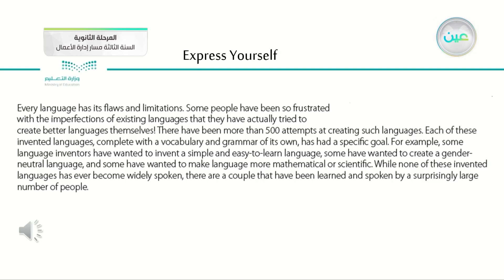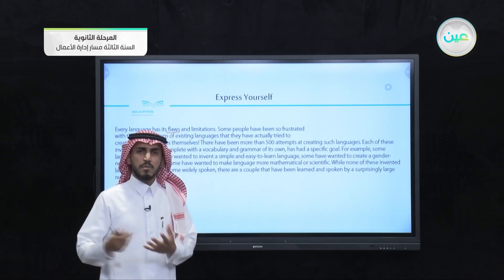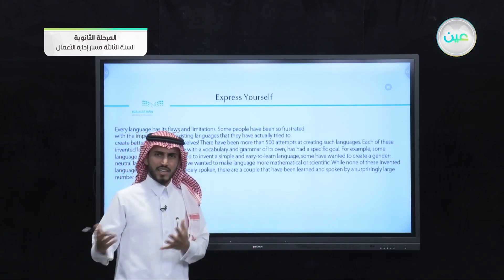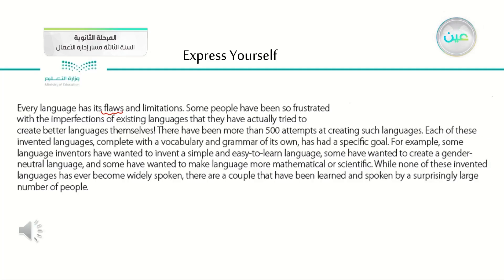Now let's stop with some of the words. The first word in the first line is 'flaws,' which means the downside of anything — the mistakes, the disadvantages. Every language has its flaws means every language is not perfect. And 'limitations' is one of the words we reviewed together from the previous lesson.